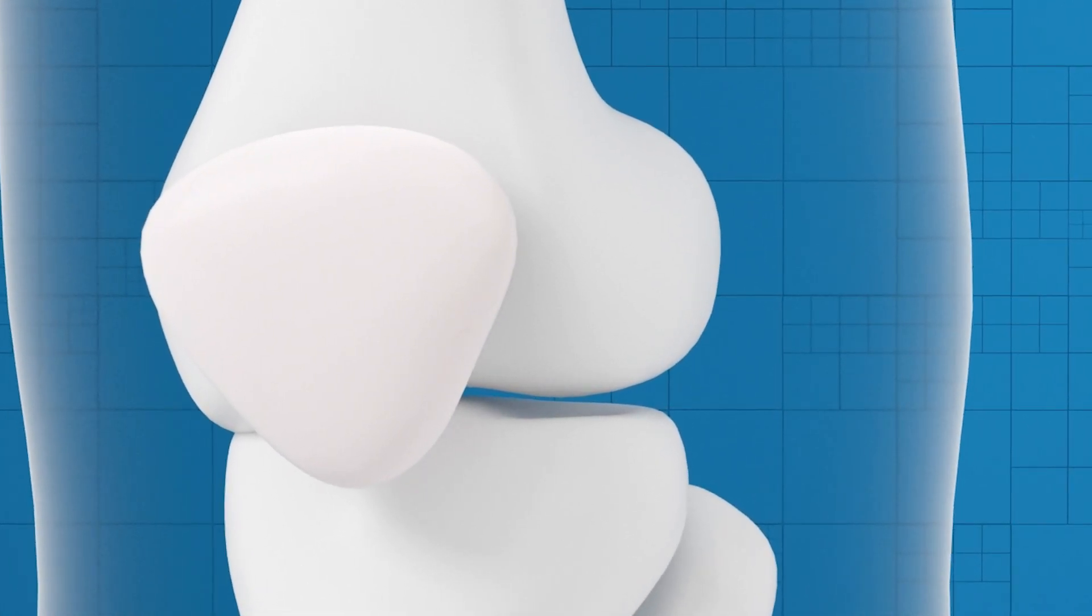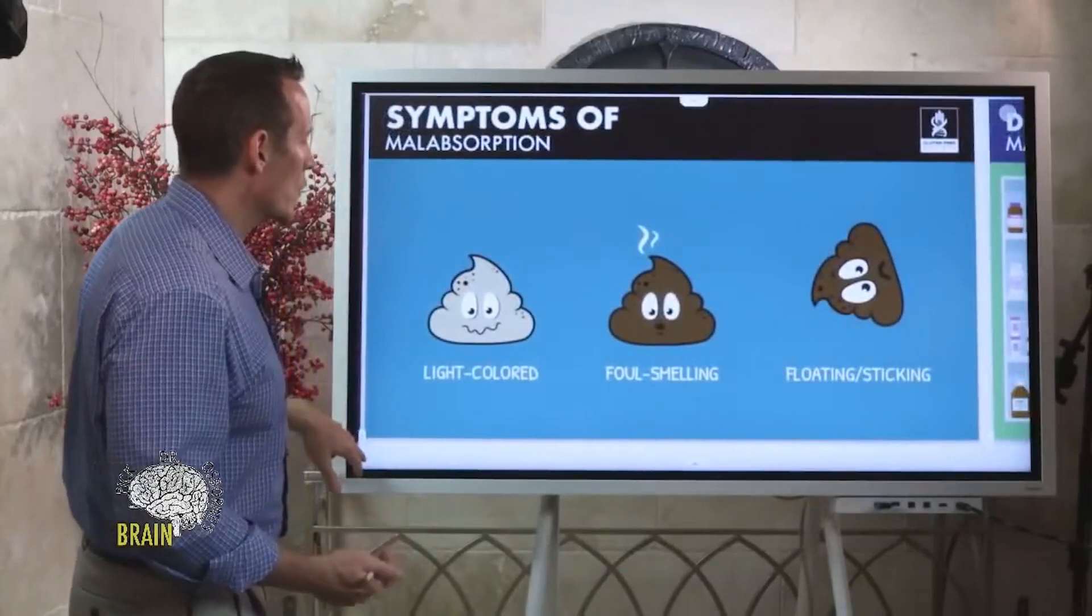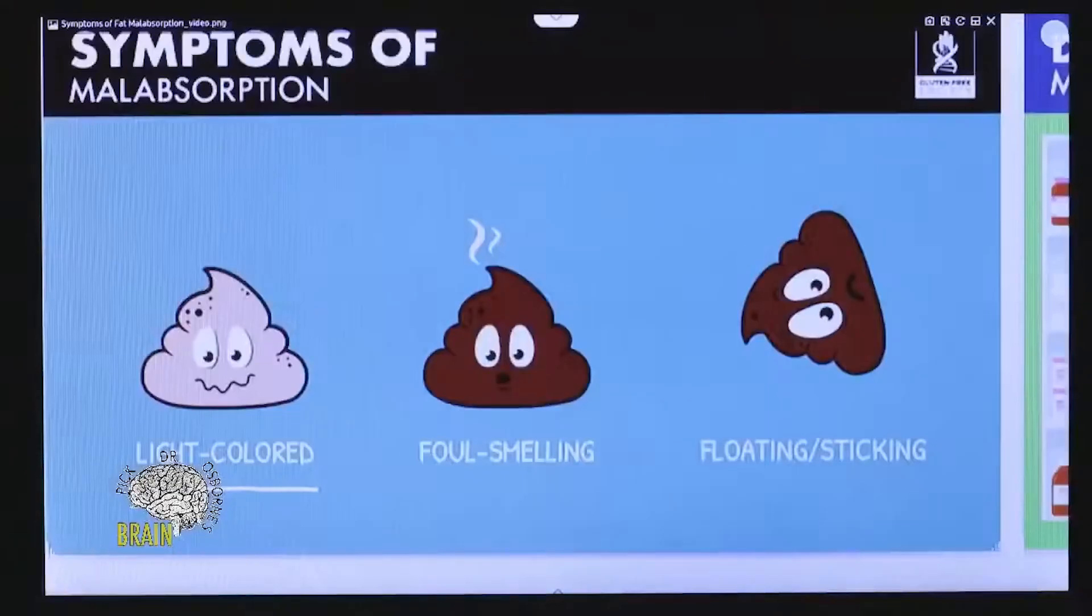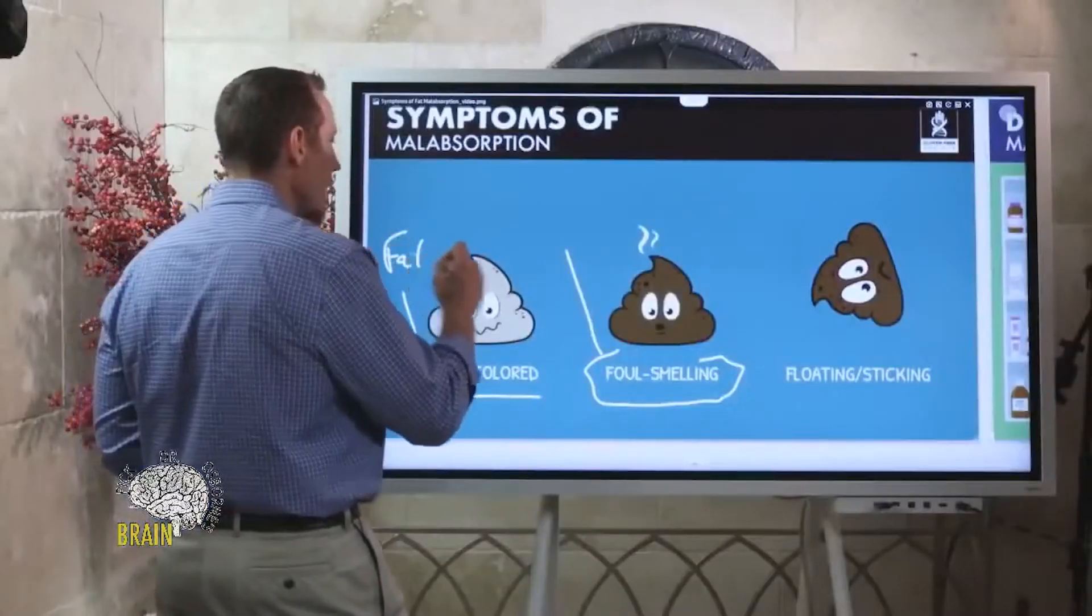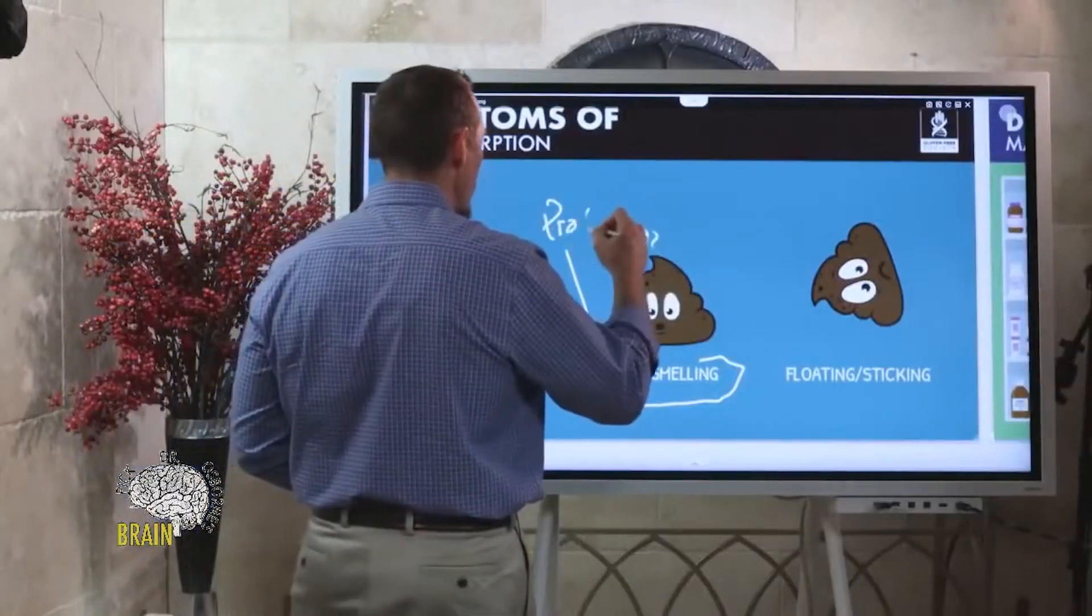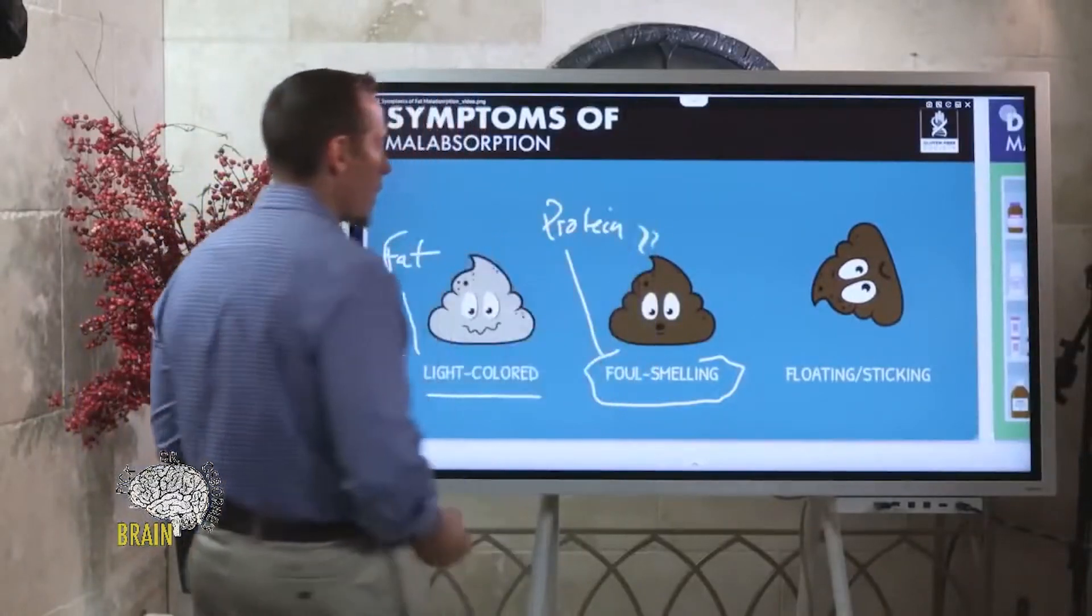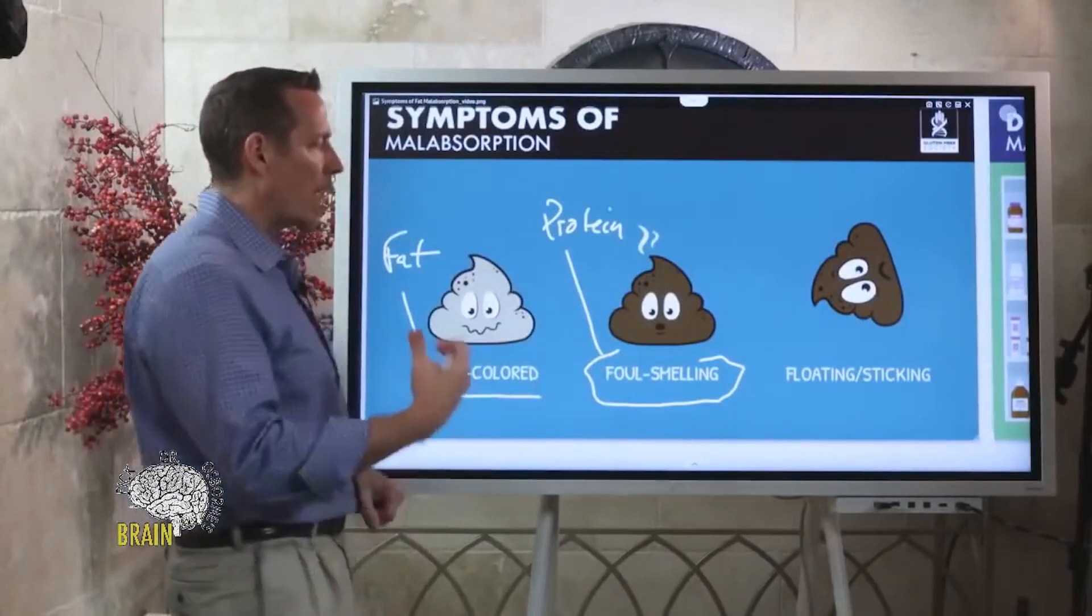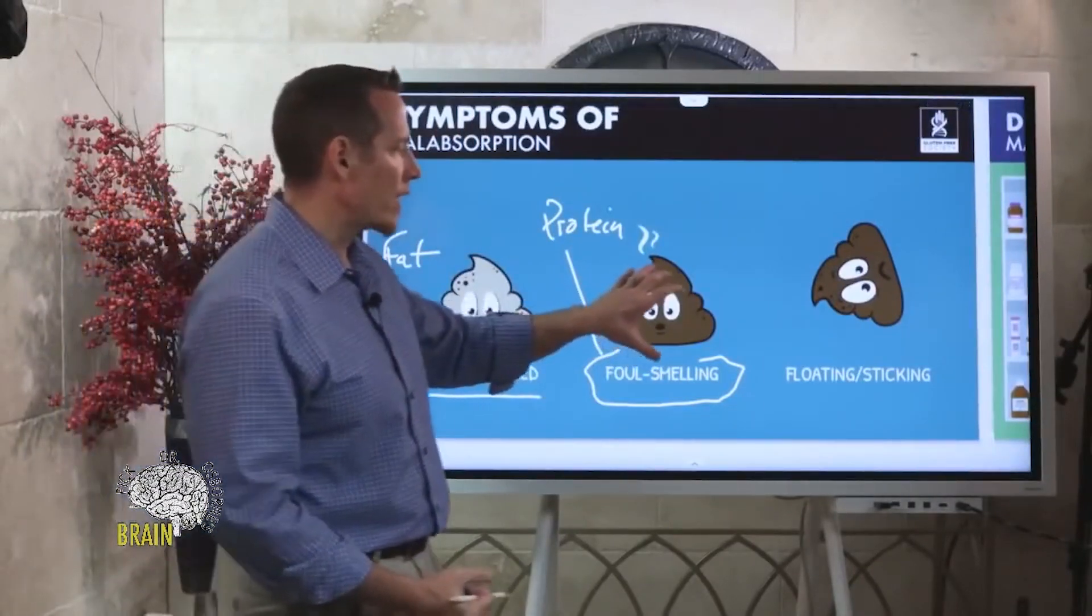Some symptoms of malabsorption: the light-colored stool, the tan or clay-colored stool—that's fat malabsorption typically. But sometimes we'll also see foul-smelling stools, and this is often protein malabsorption. The proteins, when they're not properly broken down, form different byproducts that can cause a very foul odor within the stool.